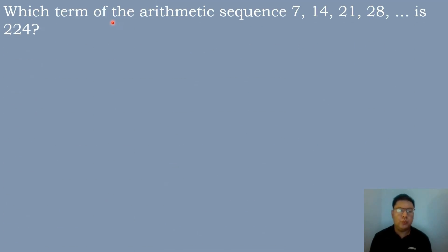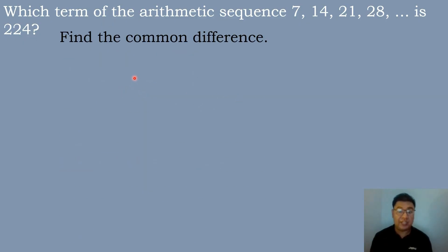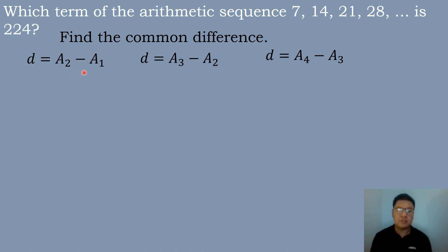So let's now have our second example. Which term of the arithmetic sequence 7, 14, 21, 28 is 224? This time we will solve for the value of n. The first step is to find the common difference using the formula: d equals a sub 2 minus a sub 1, a sub 3 minus a sub 2, a sub 4 minus a sub 3. We substitute the corresponding values.